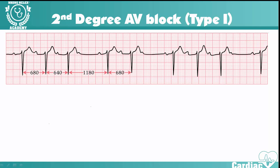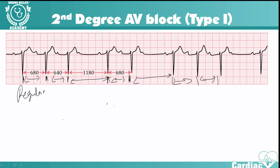For the rhythm: it is not entirely regular. You could say it is regularly irregular. Up to the dropped beat, the QRS complexes come at the same interval, but then there's a big gap, and it starts regular again until the next drop. So it is regular in certain portions then becomes irregular. The heart rate is variable, depending on the underlying rhythm.